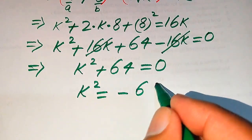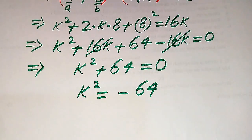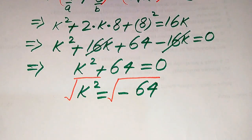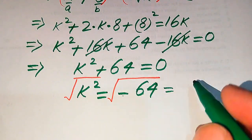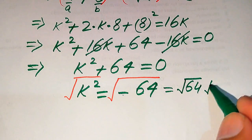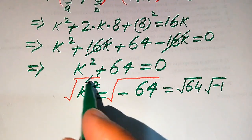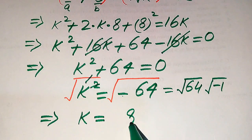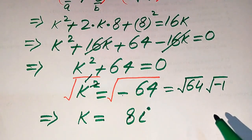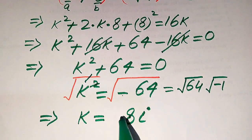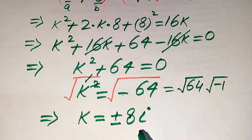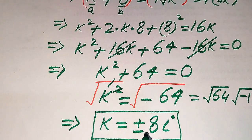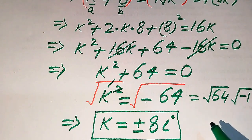Moving 64 to the right hand side: k squared equals minus 64. Applying square root on both sides, we get k equals the square root of 64 times square root of minus 1. Since square root of 64 is 8 and square root of minus 1 is iota (i), and applying the plus-minus sign, the two roots are k equals plus or minus 8i. This is the final answer.